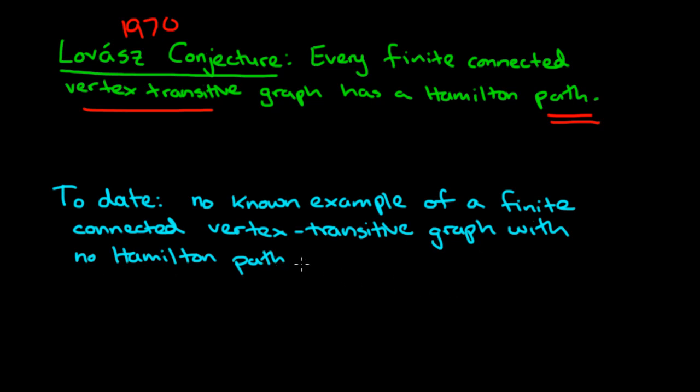In fact, when searching for the Hamilton paths in these finite connected vertex transitive graphs, we almost always get a Hamilton cycle as well. So these almost always, in fact, these almost always have a Hamilton cycle.